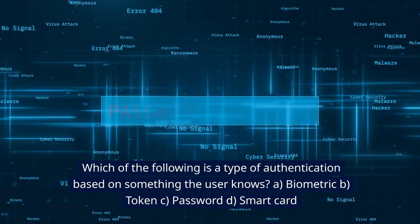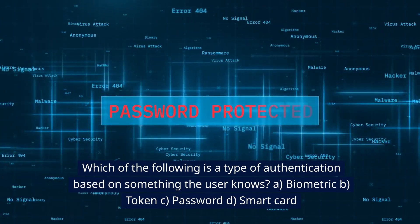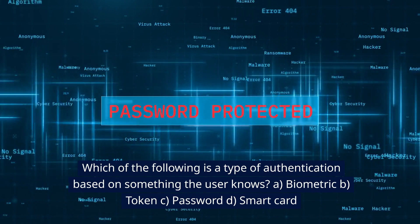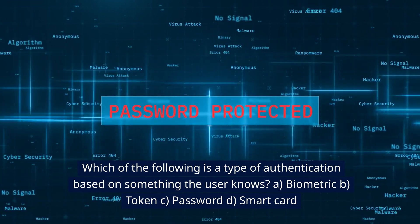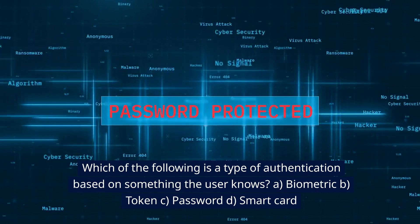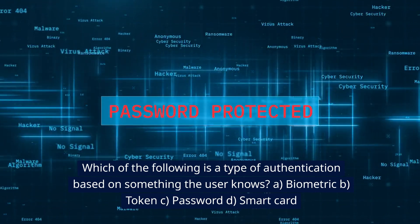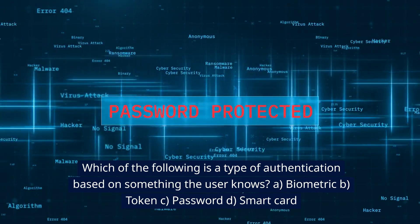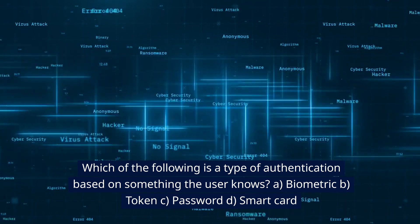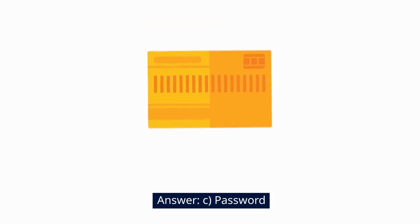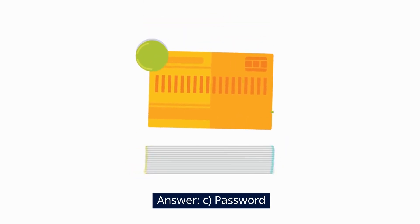Which of the following is a type of authentication based on something the user knows? A. Biometric. B. Token. C. Password. D. Smartcard. Answer: C. Password.